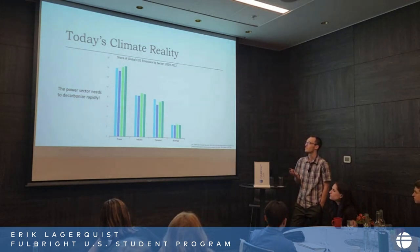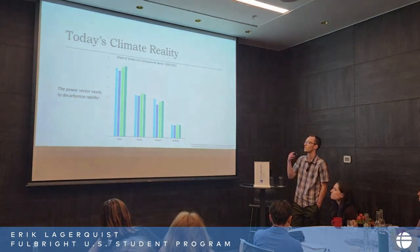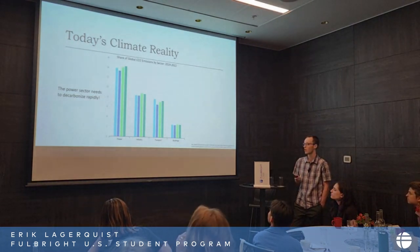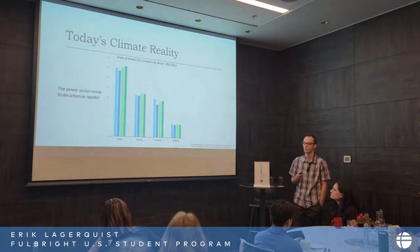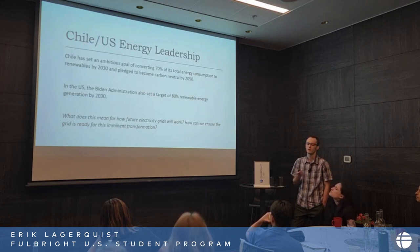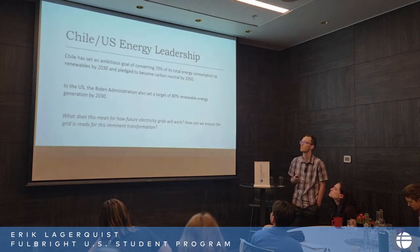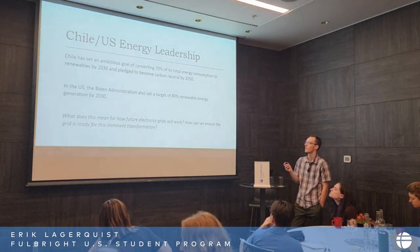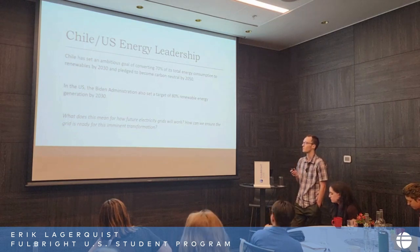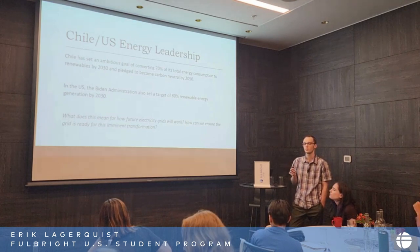As we can see, the share of global carbon emissions by sector is really taken up a lot by the power industry. So it's pretty clear that the power sector needs to decarbonize rapidly if we're going to meet our climate goals. With this in mind, Chile has set an ambitious goal of converting 70% of its total energy generation to renewables by 2030 and pledged to become carbon neutral by 2050. And in the US, the Biden administration recently also set a target of 80% renewable energy generation by 2030. So clearly, there's some great political movement happening.